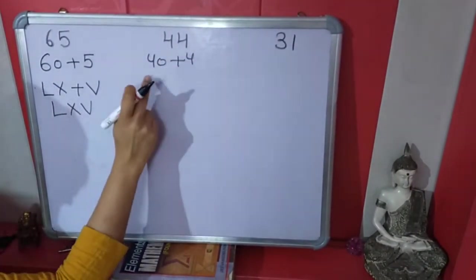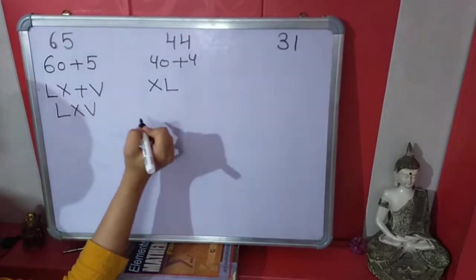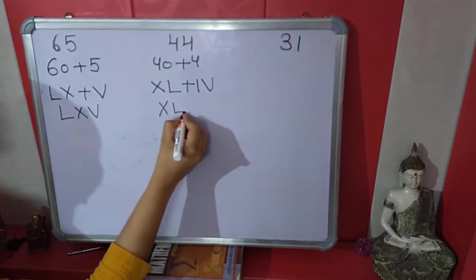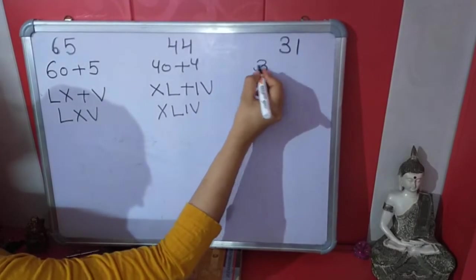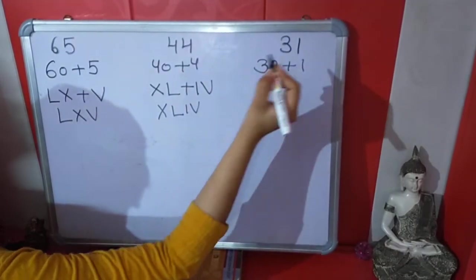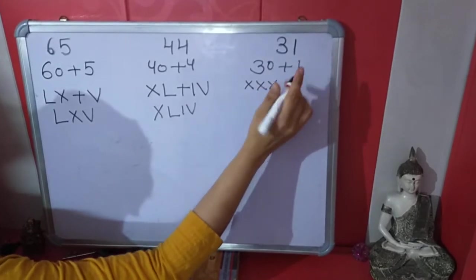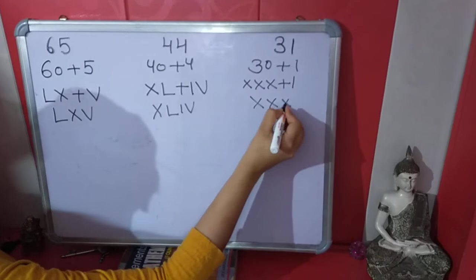44 expanded: 40 plus 4. Roman number of 40 is XL, plus 4, that will be XLIV. 31: 30 plus 1. Roman number of 30 is triple X, XXX, plus Roman numeral of 1, that is I. So 31 is XXXI.